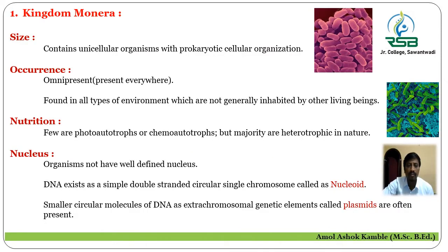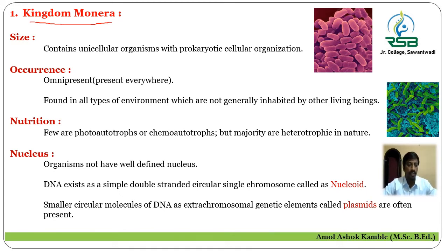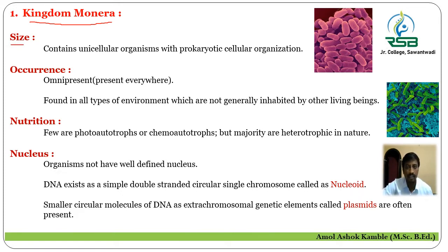That is Kingdom Monera. It is the first kingdom from the five kingdom system of classification. The first general characteristic of this kingdom is about the size of the organisms included under Kingdom Monera. They are unicellular in nature — unicellular means they are made up of a single cell — with prokaryotic cellular organization.